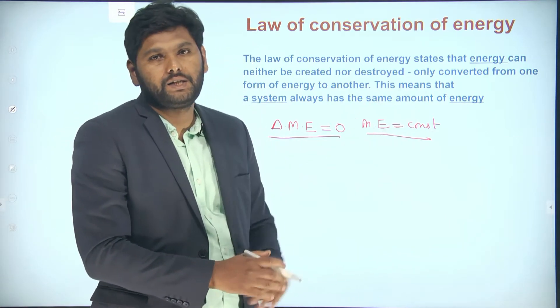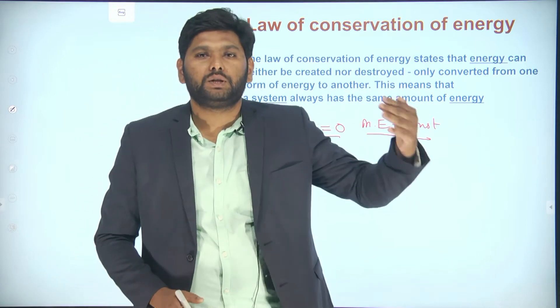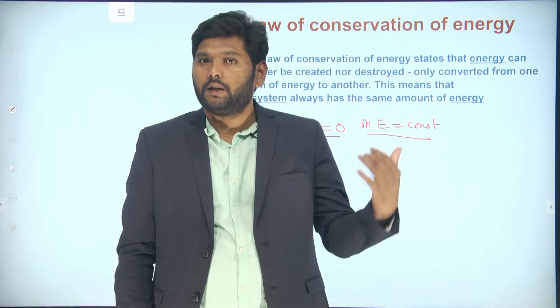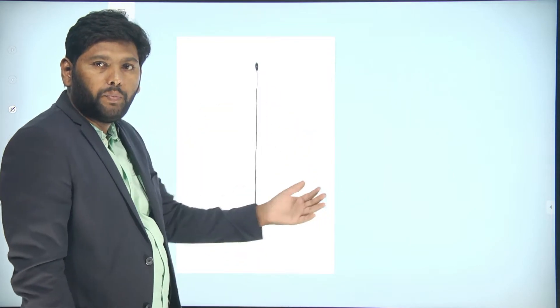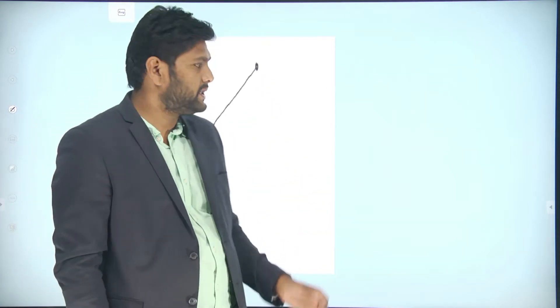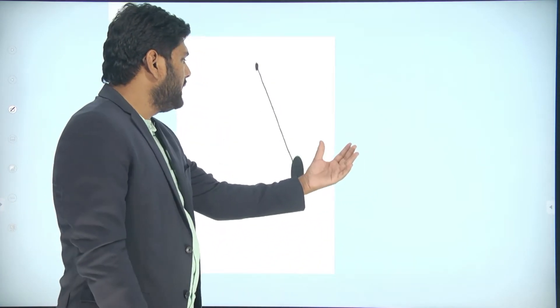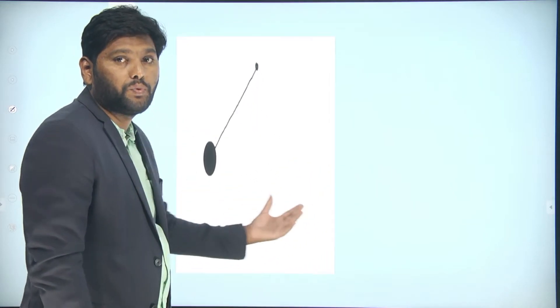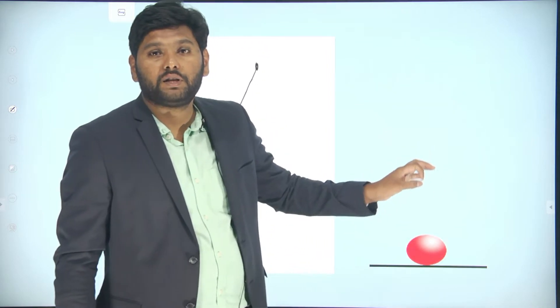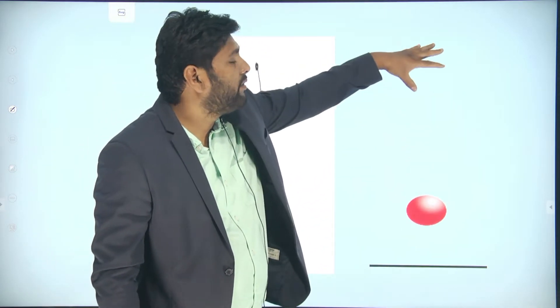Now, where can we observe this law of conservation of energy — at what positions and for what objects? The first example is a pendulum oscillating. In that pendulum oscillation we can observe the conservation of energy, because when it is moving from extreme position to mean position and mean position to extreme position, we can observe conservation of energy. Also, in another case, you can observe the law of conservation of energy — that is for a freely falling body.